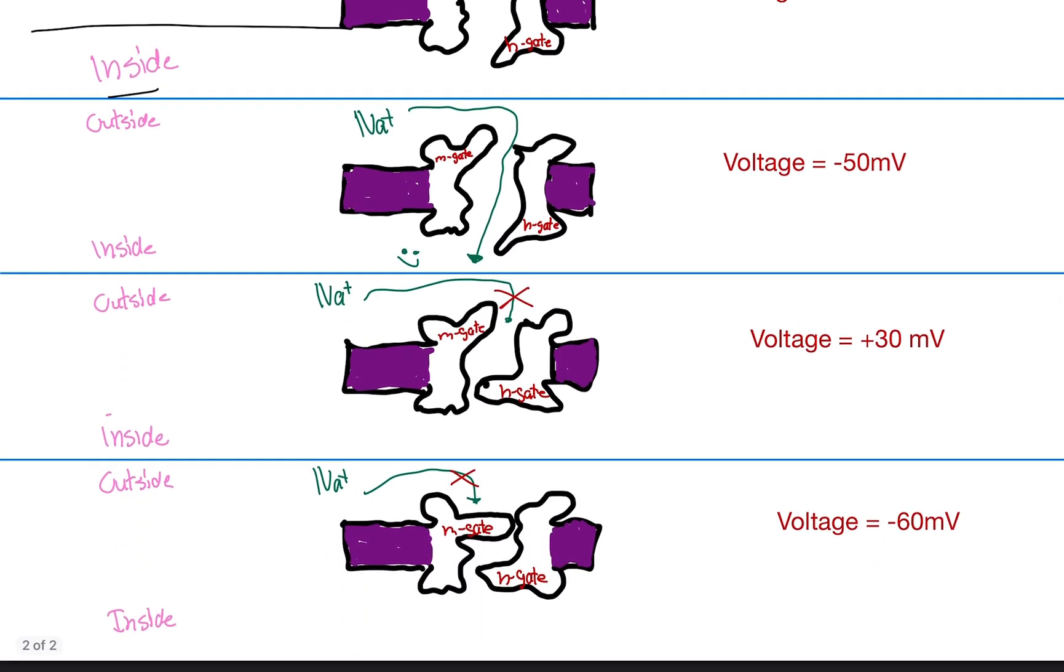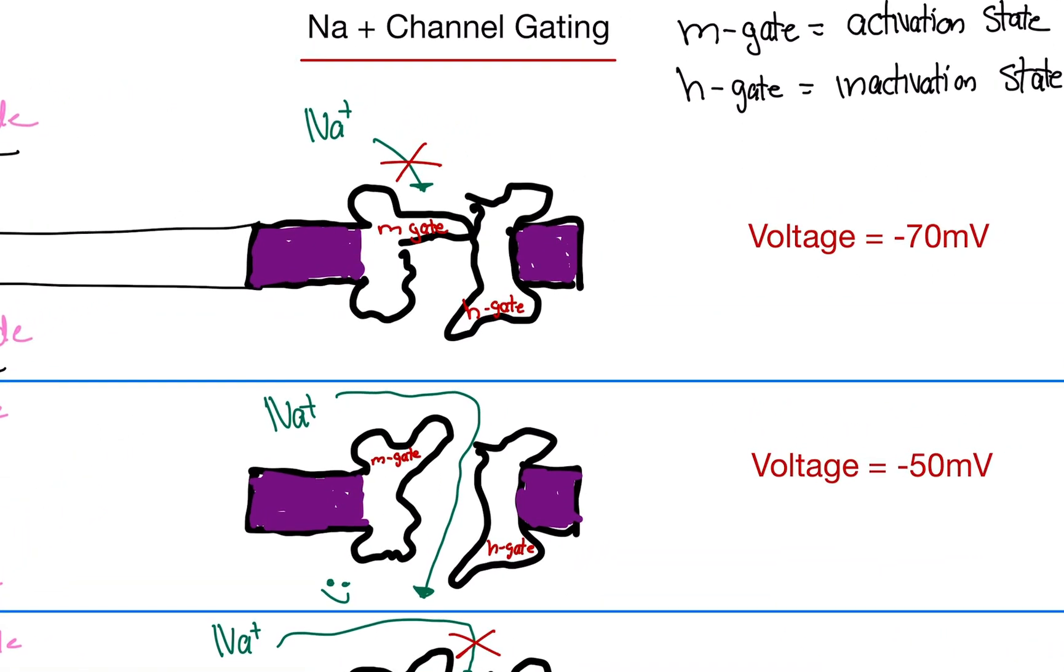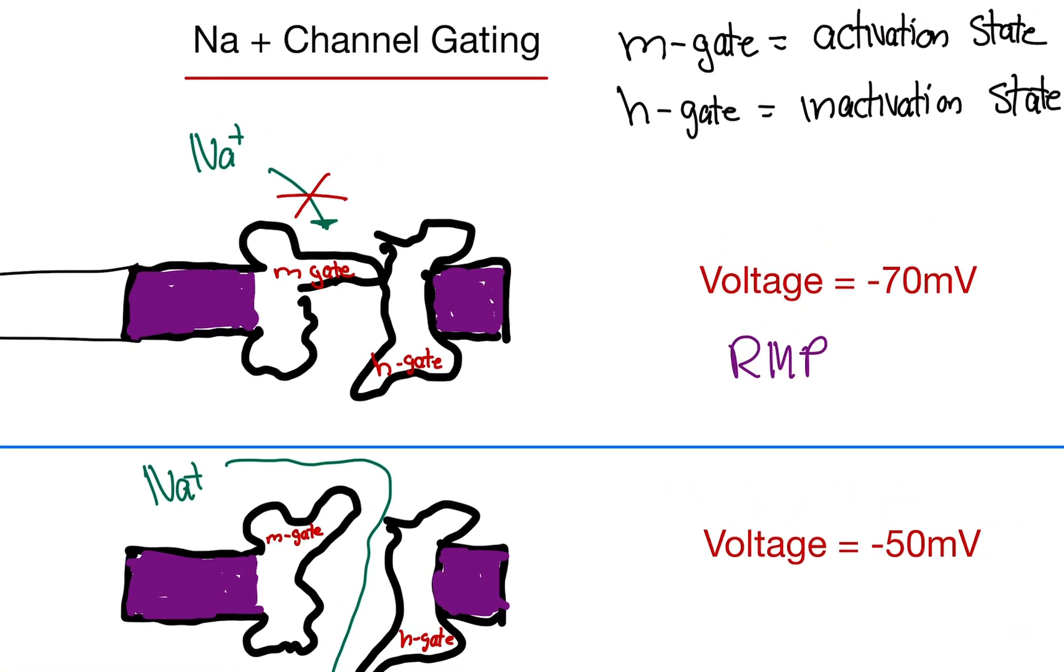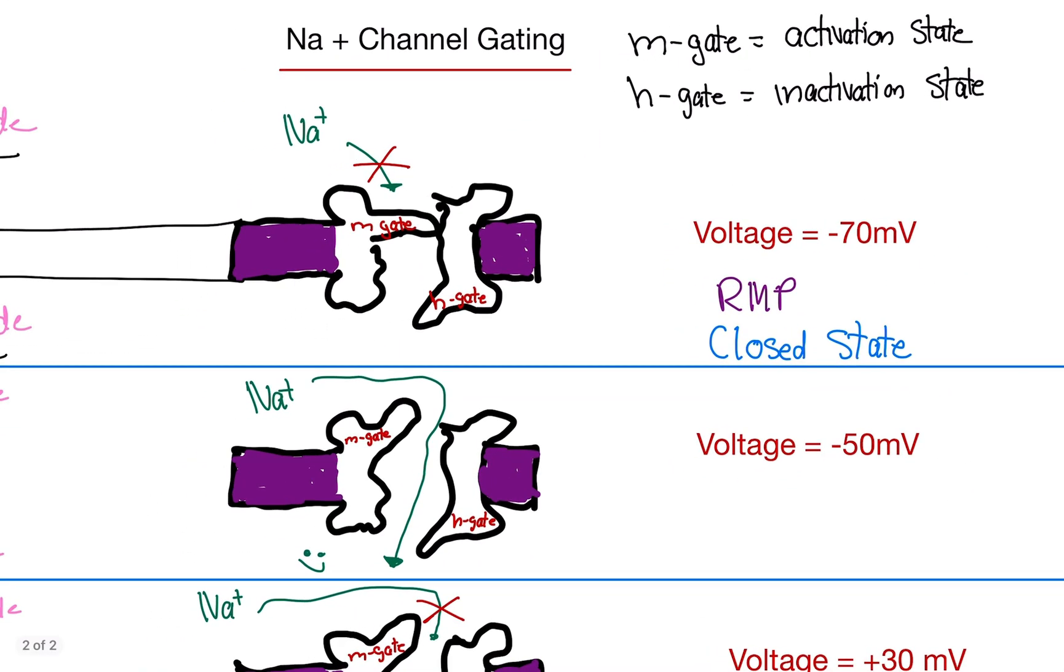So each of the sodium channels is basically individual. We're going to look at it separately at different voltages, if that makes sense. So the first scenario, when we're at negative 70 millivolts or resting membrane potential. Notice the M gate is closed, and the H gate is wide open. Since one of the gates is closed, you immediately can say sodium cannot go through. It's going to be stuck outside. Notice that we call the M gate the activation state. The activation gate is closed. So we call this the closed state. No sodium is going to get into the cell. It's not possible. One of the gates is closed.